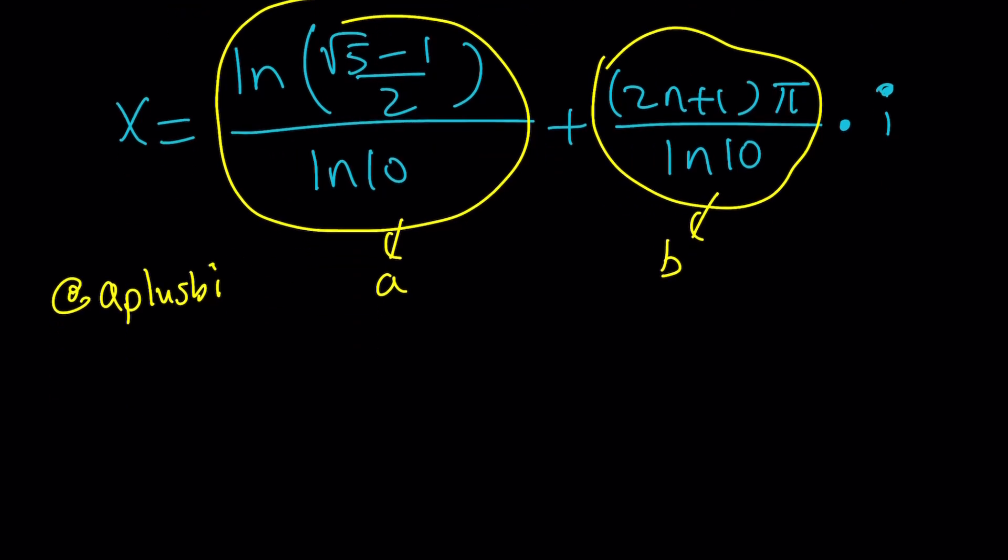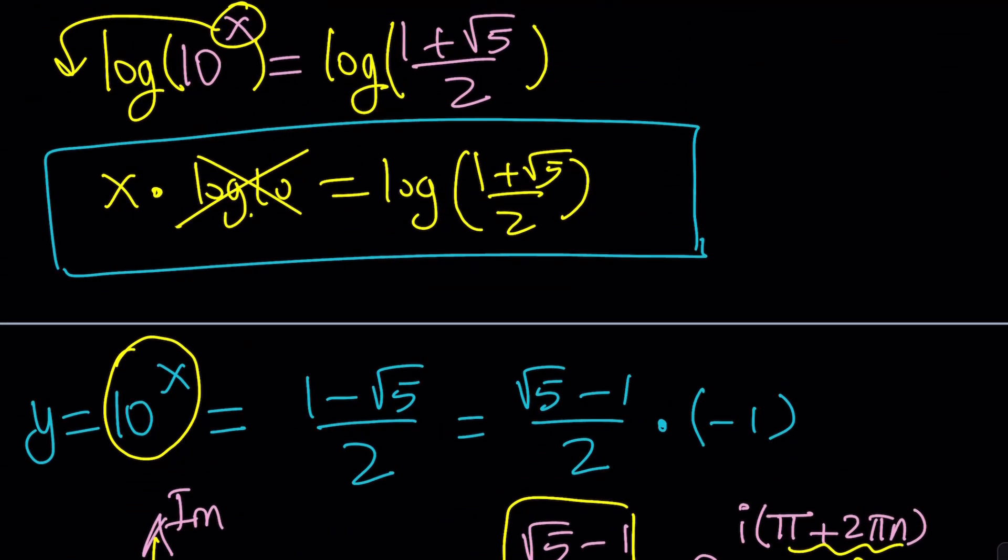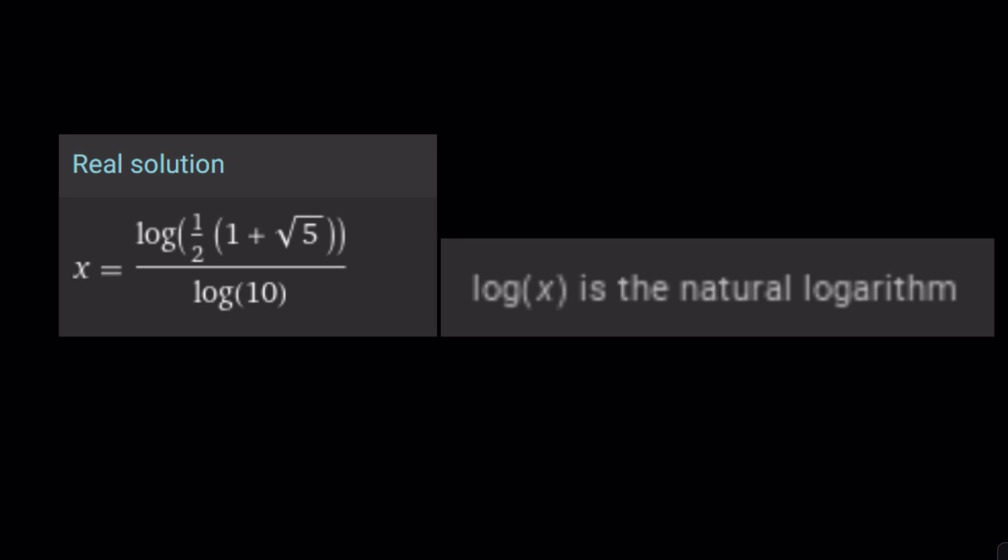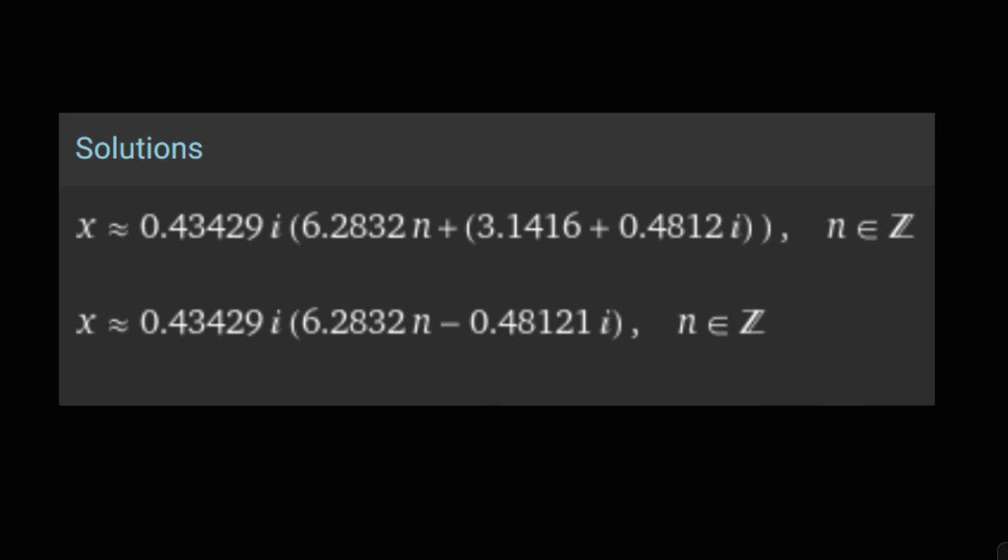But for n equals 0, you get a slightly simpler solution, which is going to be the principal value. Anyways, so we got two solutions. One of them is real, which is this one, and the other one is non-real, or should I say complex? But when I say complex, real solutions are also included, aren't they? Let's see if I have anything else for you. So, this is basically the real solution. Unfortunately, Wolfram Alpha uses log for natural log, which is ln, but what can you do about it? And here's the complex solutions. Do you like them? Anyways, this brings us to the end of this video. Thank you for watching. I hope you enjoyed it. Please let me know. Don't forget to comment, like, and subscribe. I'll see you next time with another video. Until then, be safe. Take care. Bye-bye.